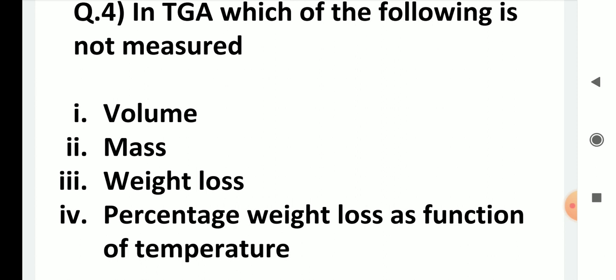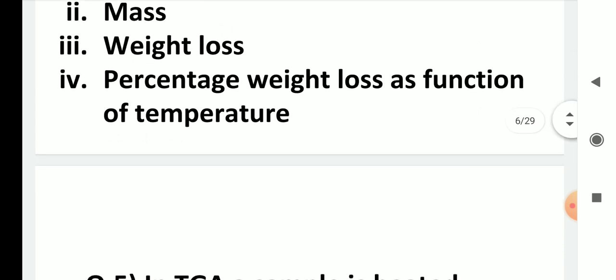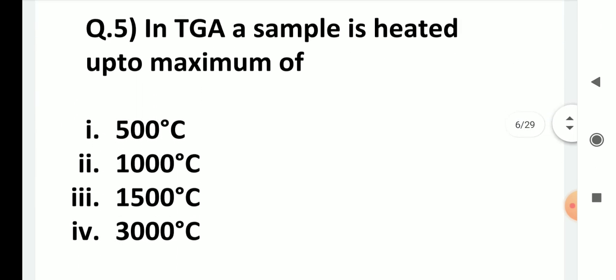In thermogravimetric analysis, which of the following is not measured: volume, mass, weight loss, or percentage weight loss as a function of temperature? Since this is thermogravimetric analysis, you measure mass, weight loss, or percentage weight loss. There is no role for volume — so volume is not measured, and the answer is the first one.